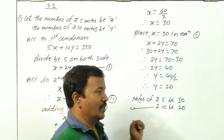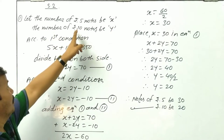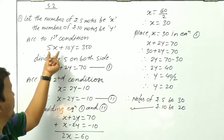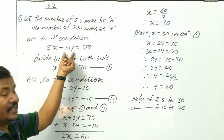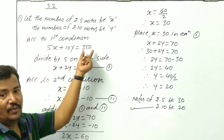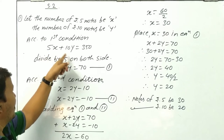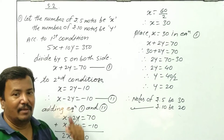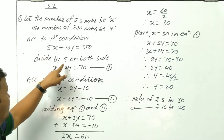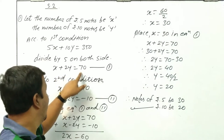Let the number of 5 rupees notes be x and the number of 10 rupees notes be y. According to the first condition: 5x plus 10y is equal to 350. Divide by 5 on both sides — 5, 10, 350 are all in the table of 5 — so we get x plus 2y is equal to 70. This is Equation 1.